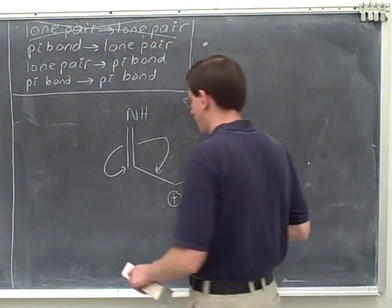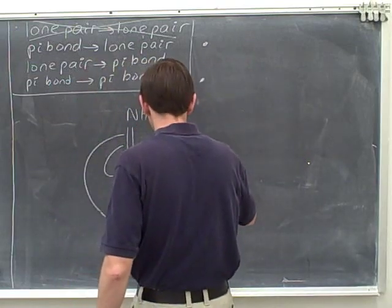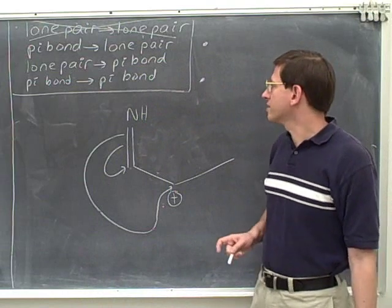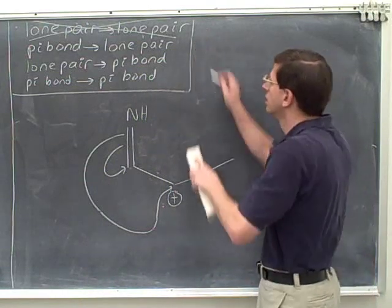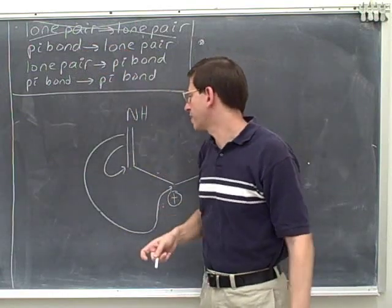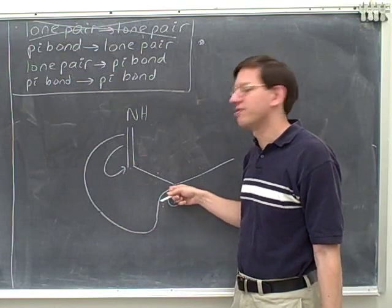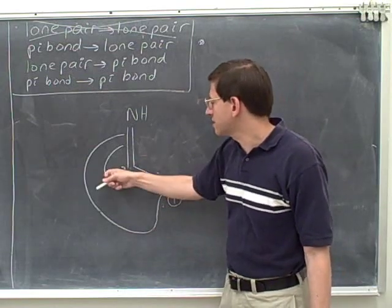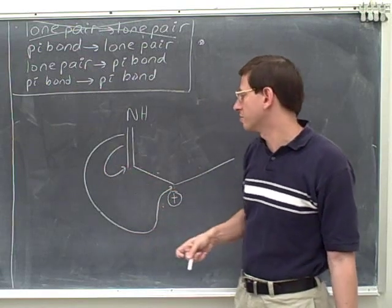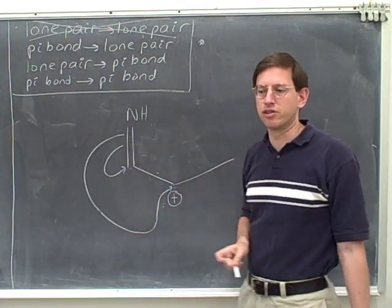The as close as possible rule is only for when you're comparing two arrows of the same type of transition. For example, which of these two arrows would be better? Now these are both the same type of transition — they're both pi bond to lone pair. But in one case we're putting the lone pair on this carbon, and in the other case we're putting the lone pair on this carbon. Clearly this arrow is better, because it's putting the lone pair closer to where the original pi bond was. This arrow is bad because it's taking this pi bond and moving it a long way away into this lone pair.